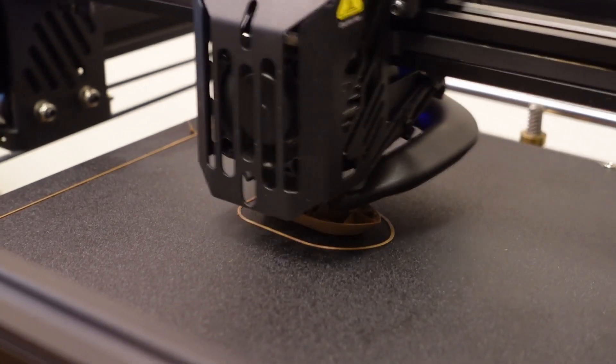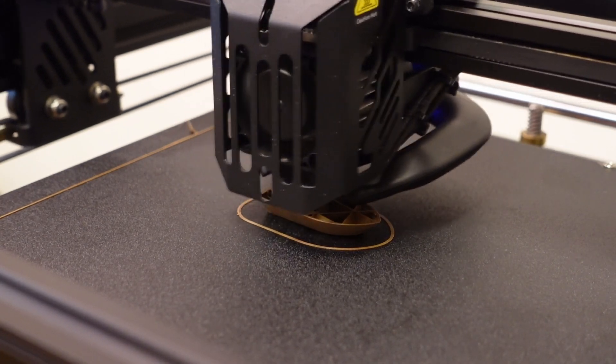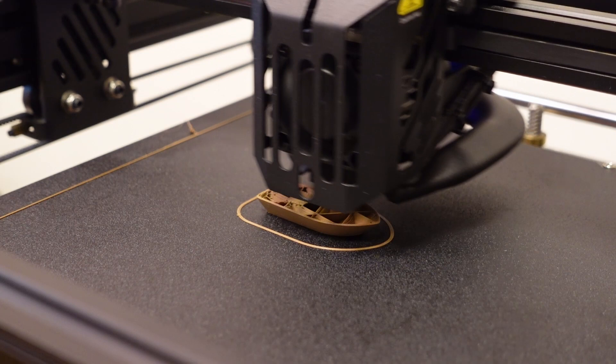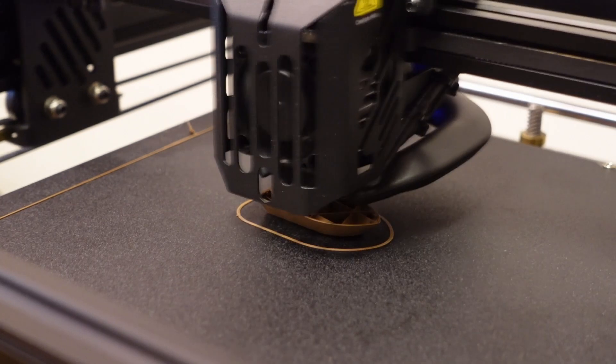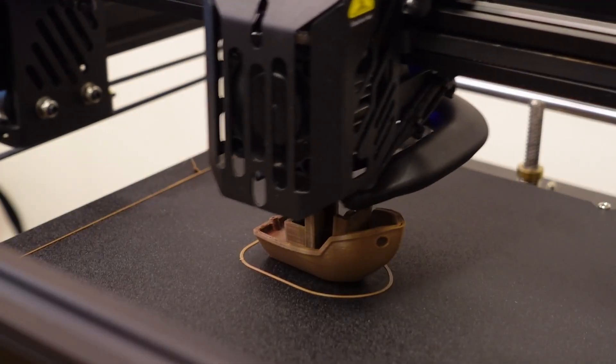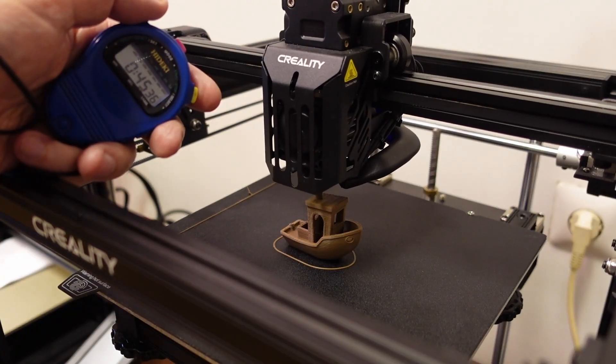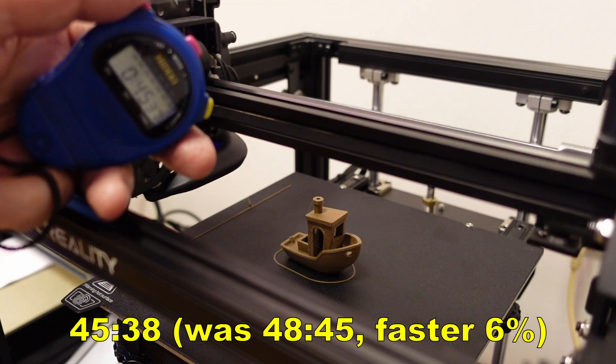For the first look the printing speed is very similar. Of course it is because I'm using the same G-code. Only the acceleration is different and the Benchy is a small object with a lot of accelerations. I believe that here also we will have a little bit smaller printing time. 45 minutes 38 seconds, and this is 6% faster than with the stock printer.